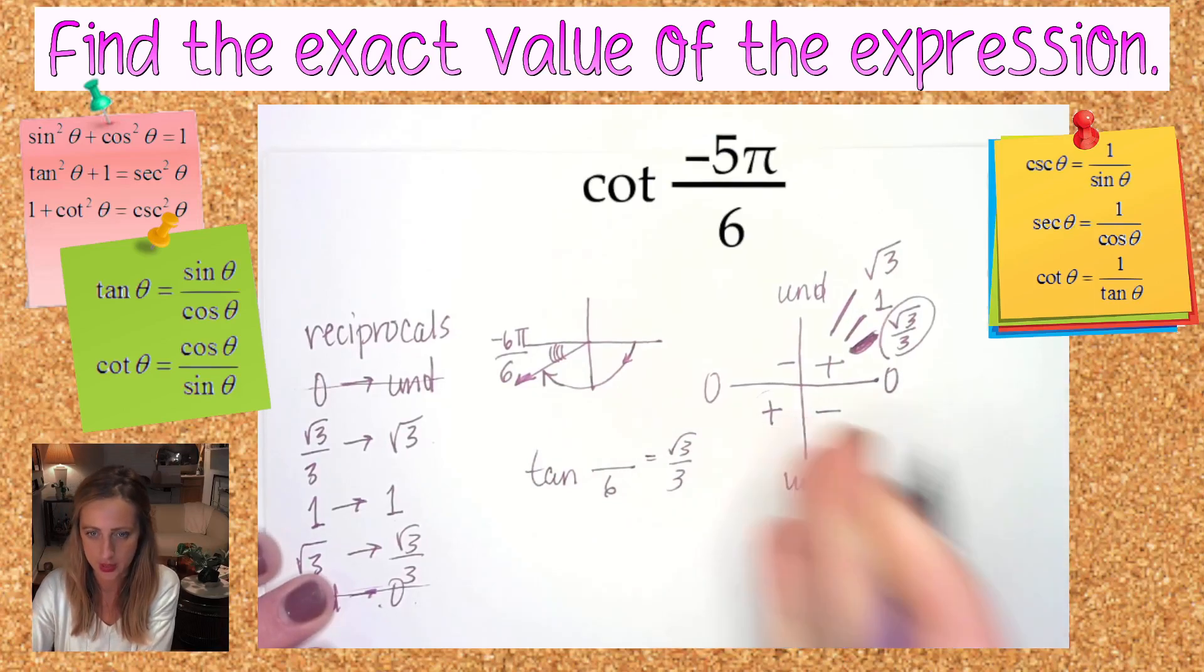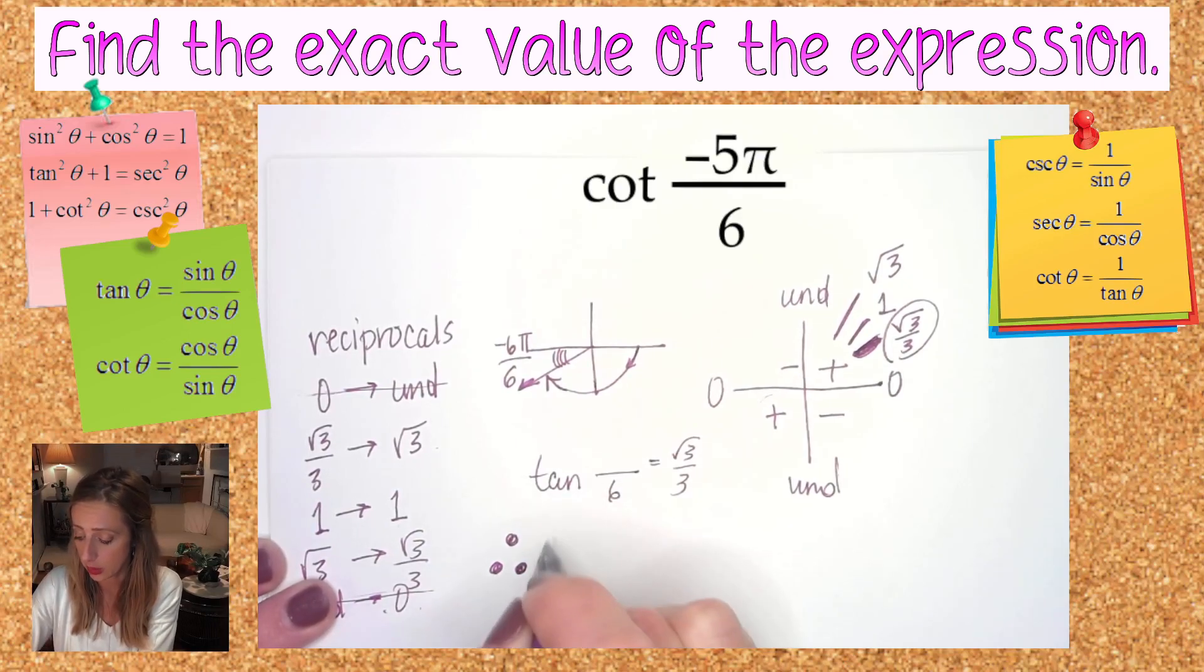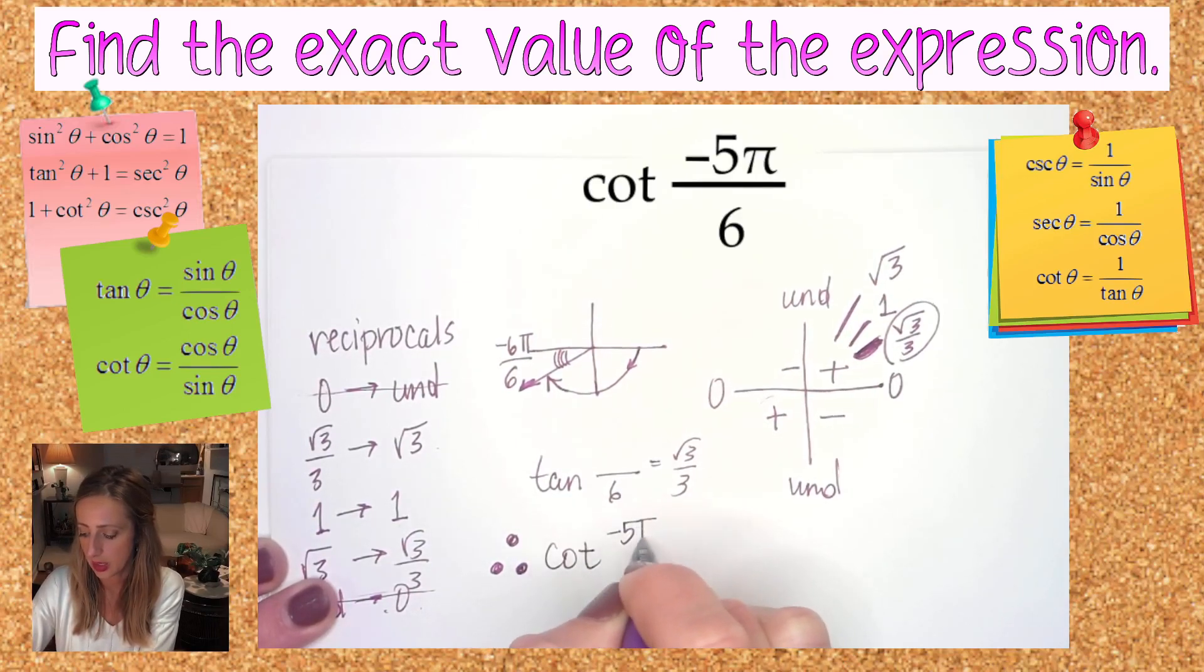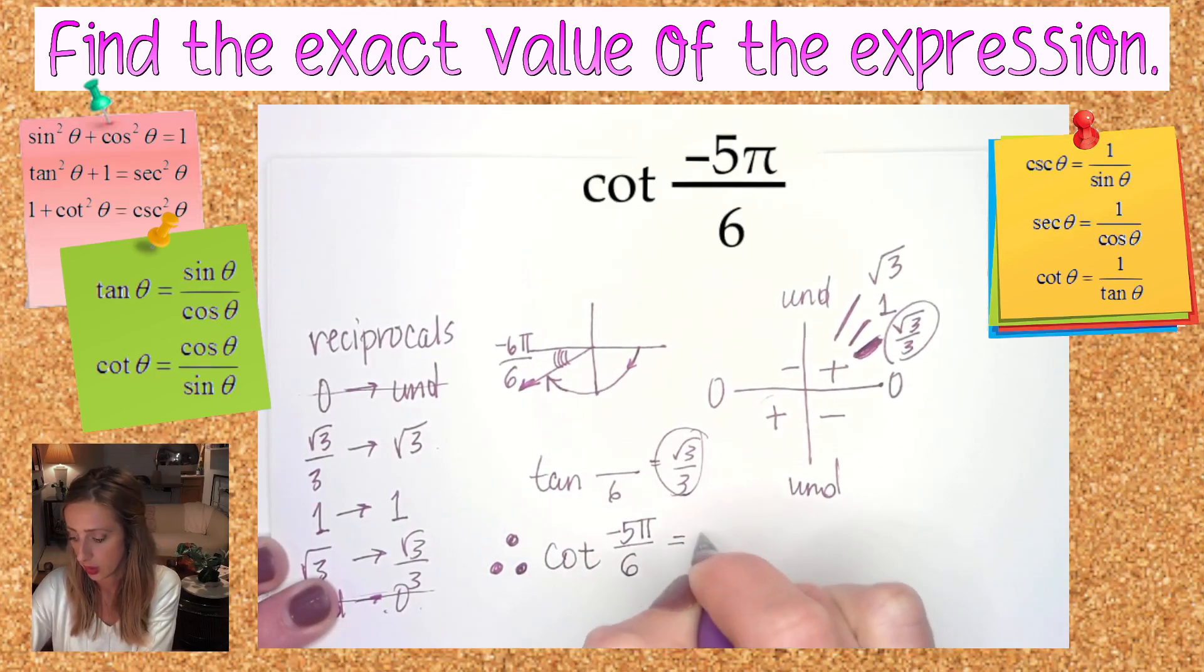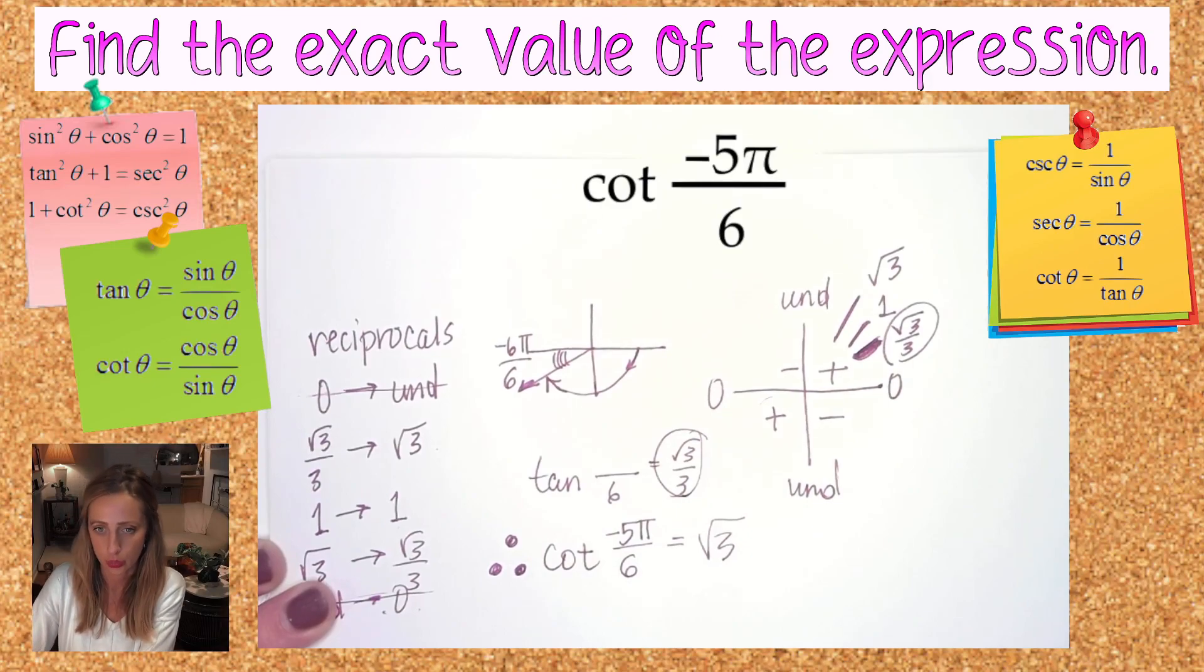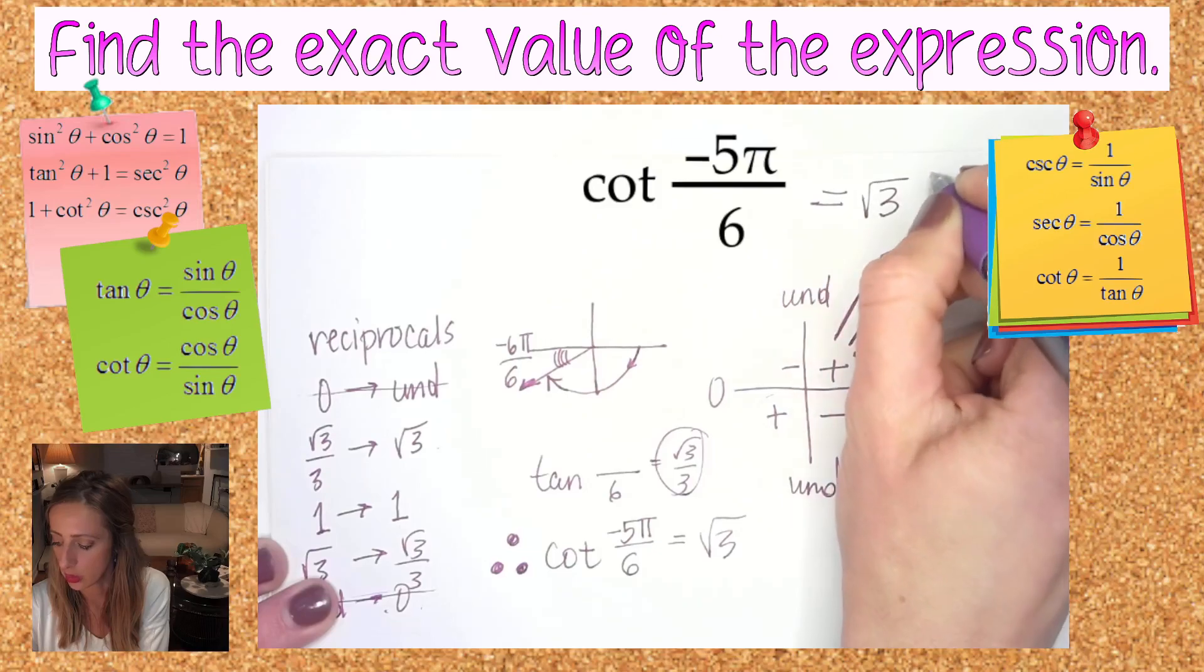Positive or negative? We just said it's positive in this quadrant. Therefore—the symbol for therefore is three dots in a triangle—therefore we can conclude that the cotangent of negative 5π over 6 is the positive reciprocal, which is √3.